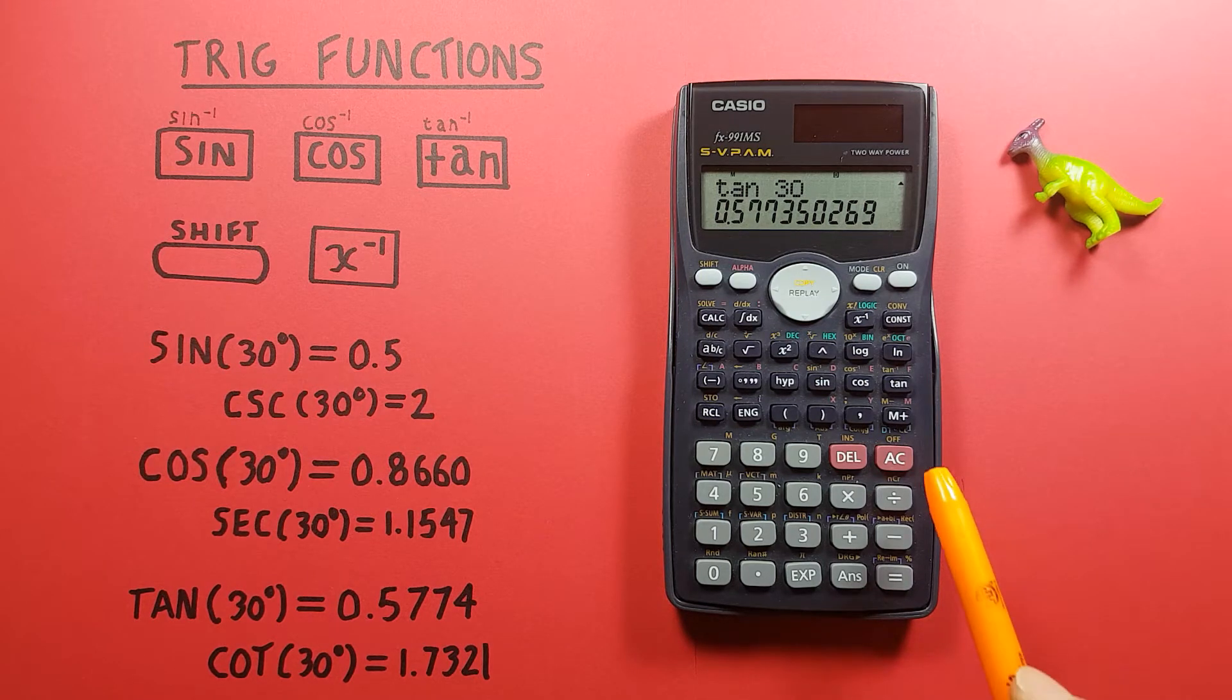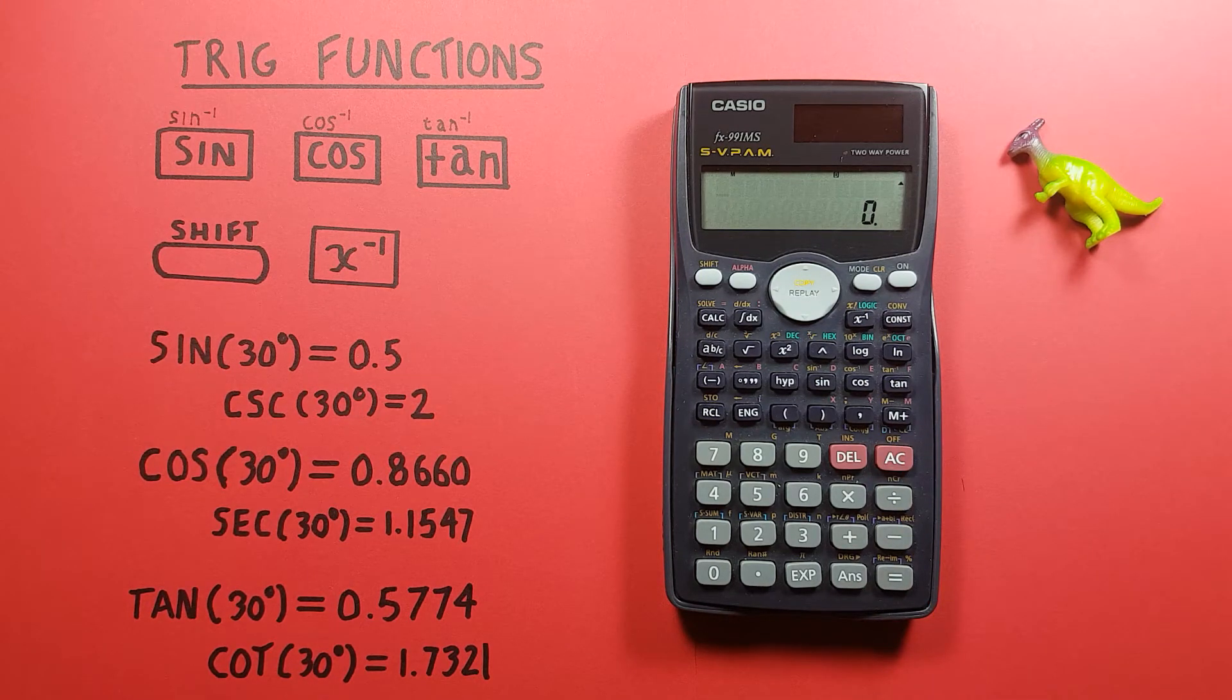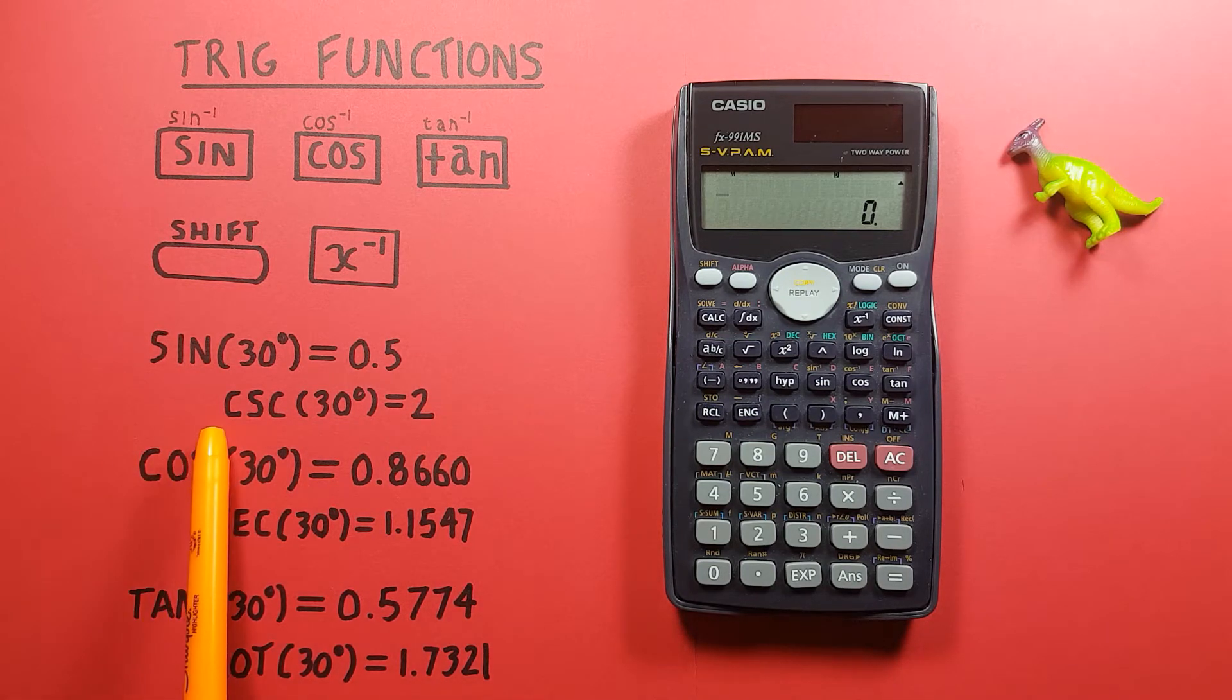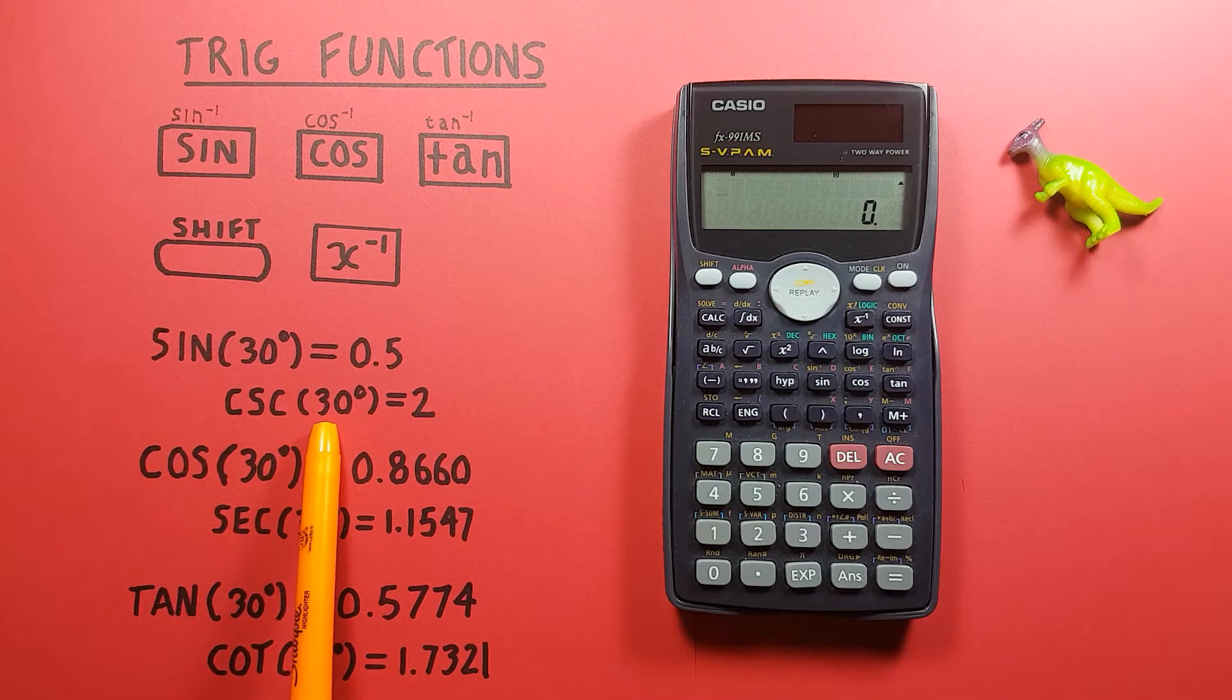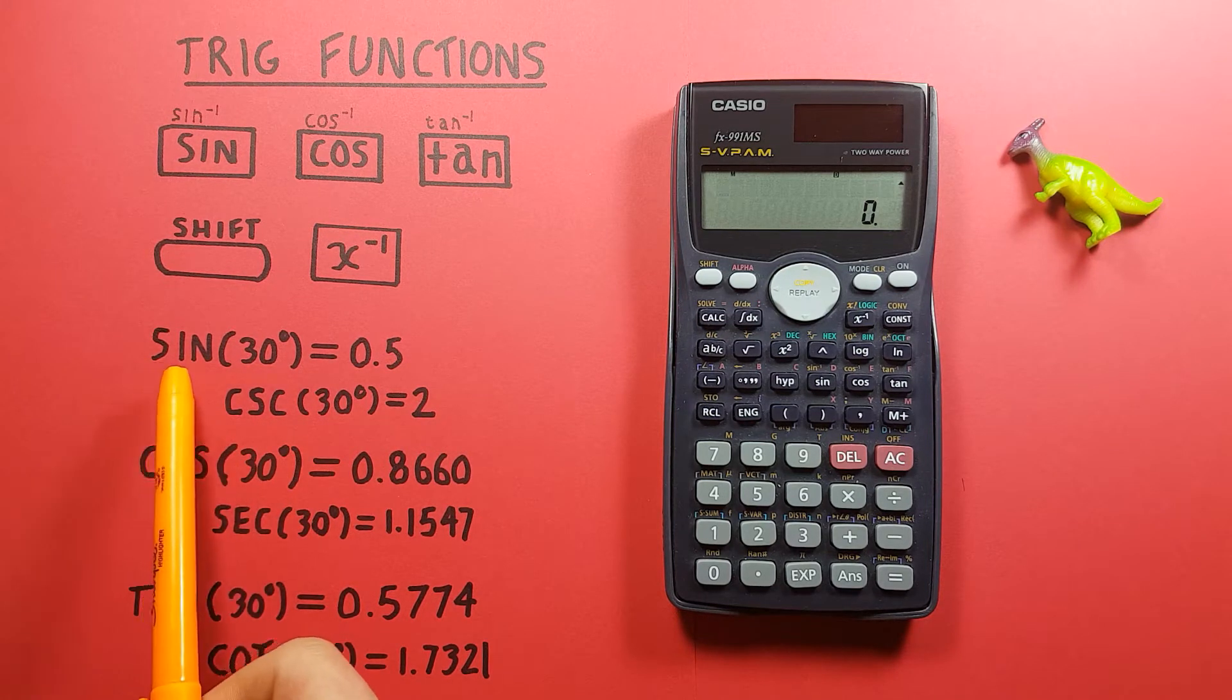Easy enough, but what if we wanted to find functions like cosecant, secant and cotangent? Well to do this what we actually have to do is inverse the result of its corresponding function.